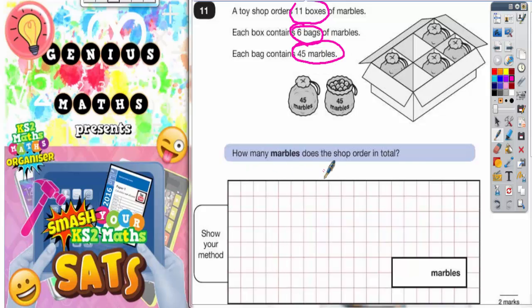How many marbles does the shop order in total? Now don't be shy of writing on a diagram if it helps you. So here we've got one box on the picture, and in the box we've got six bags. You can see there's six spaces there, but obviously these two bags will belong in these two spaces, so six bags.